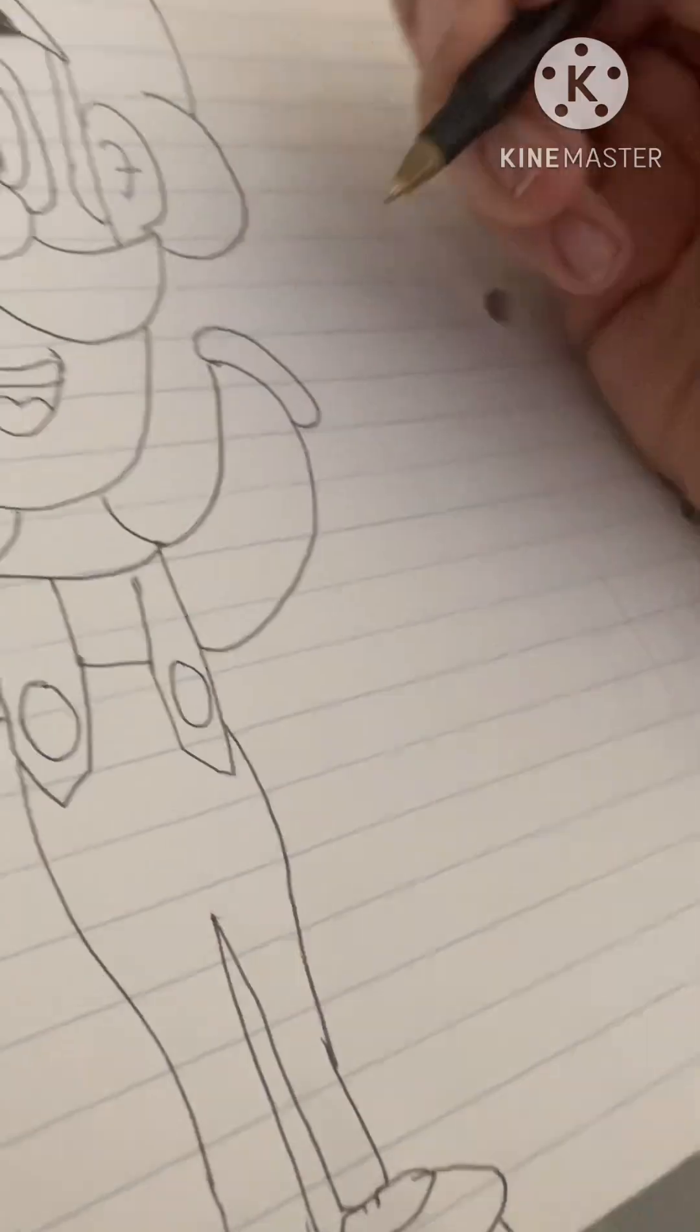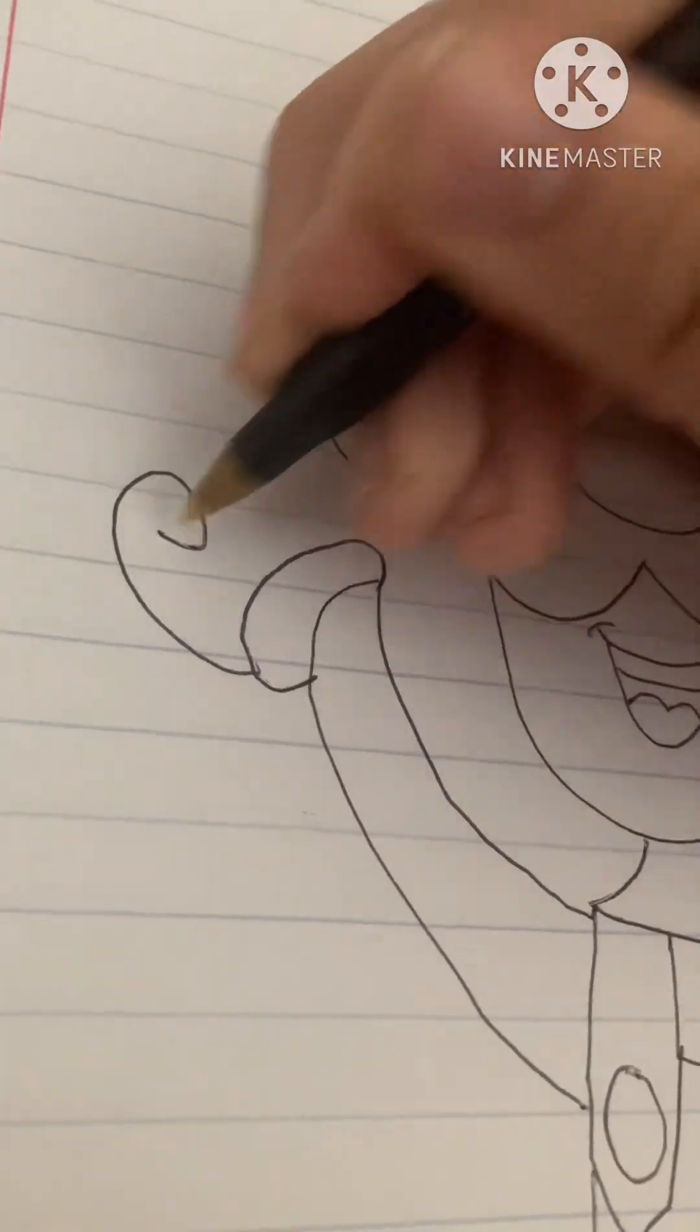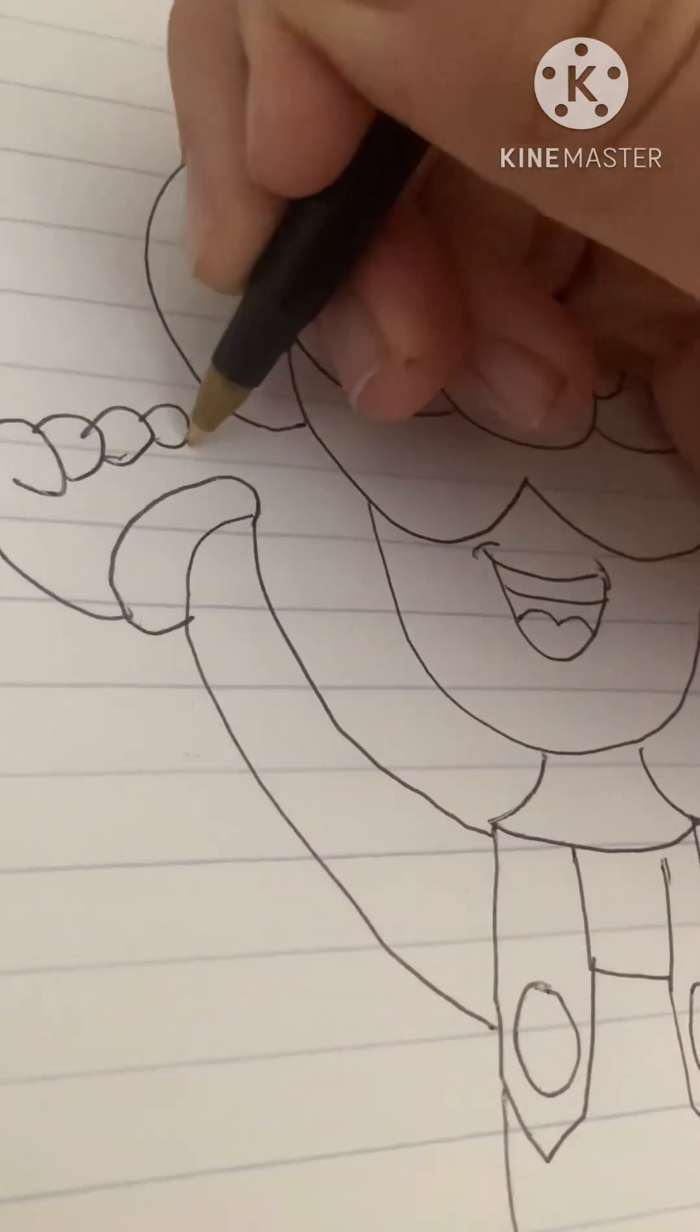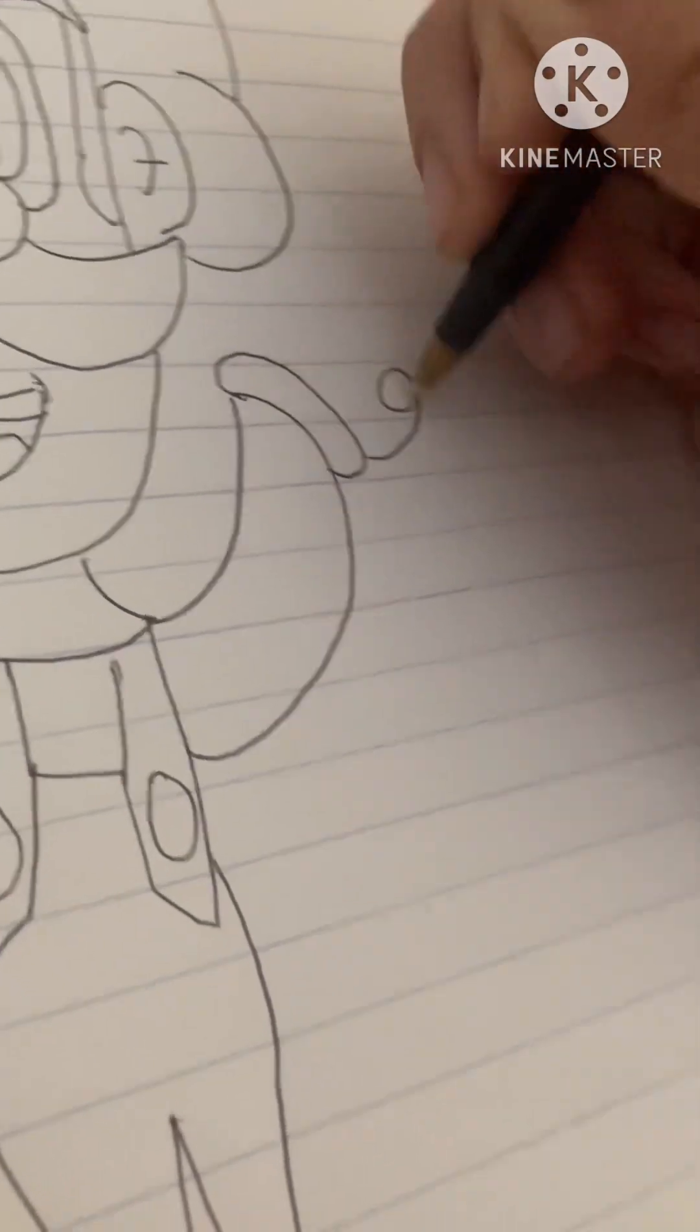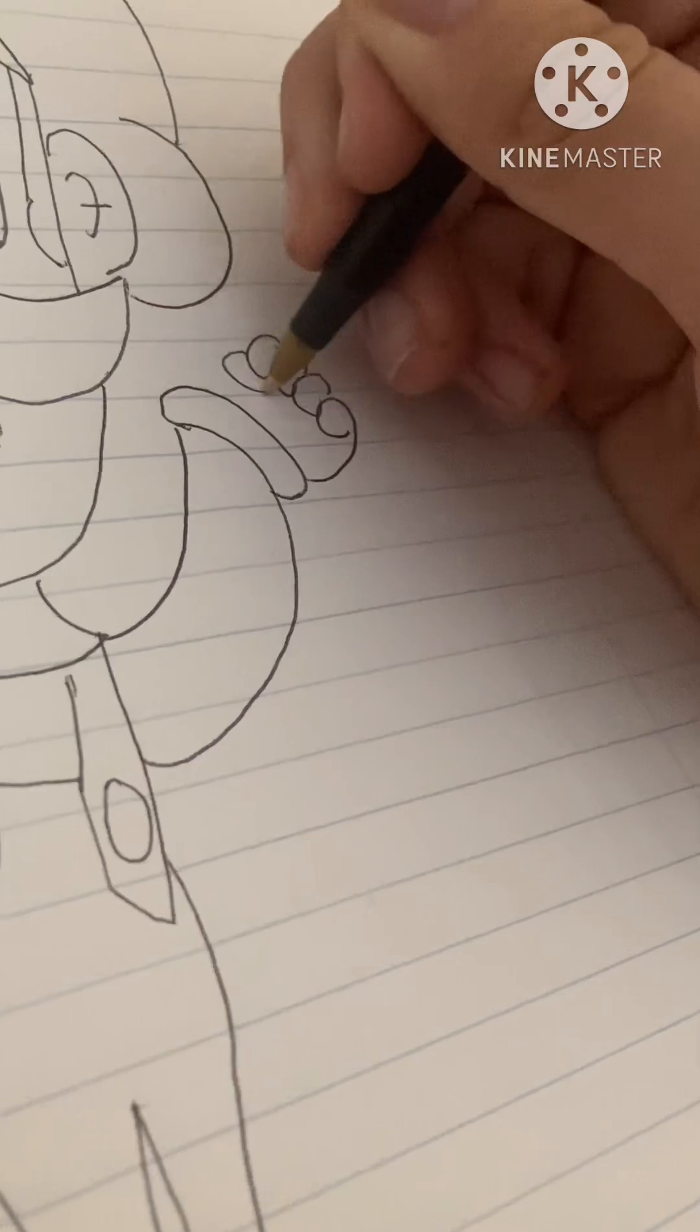Now you do this to his little hands. And now what you're gonna do is you're gonna go like this. One, two, three, four, five, and back. Now this one. One, two, three, four, five. And that is pretty much how you draw Luigi.